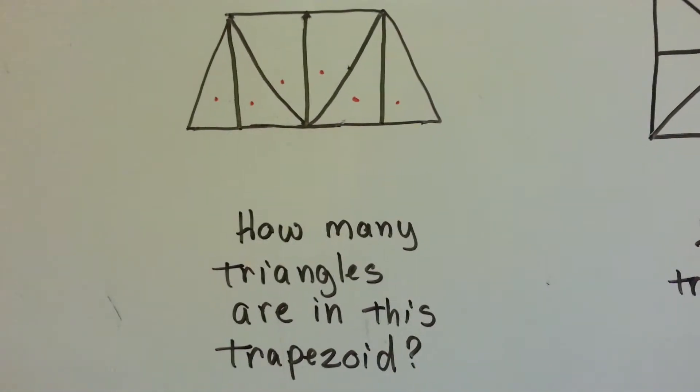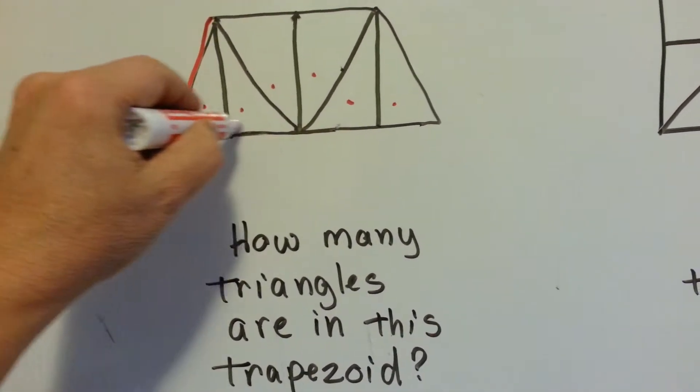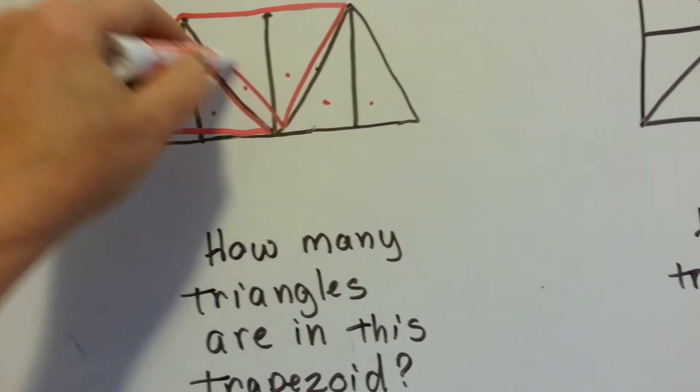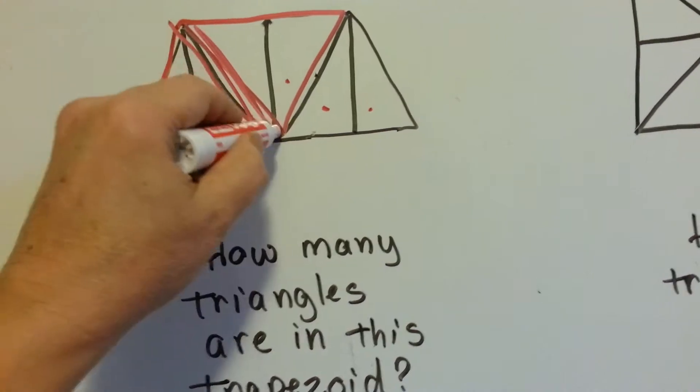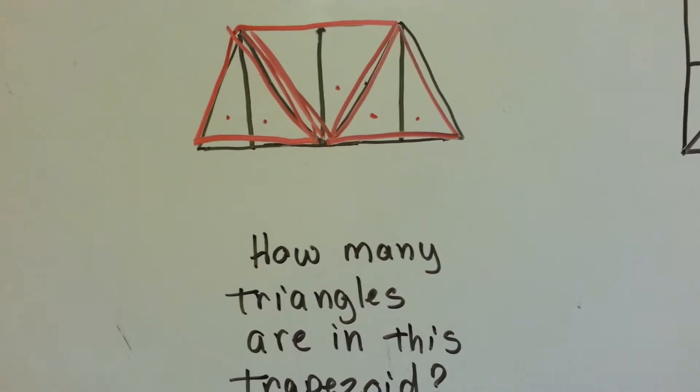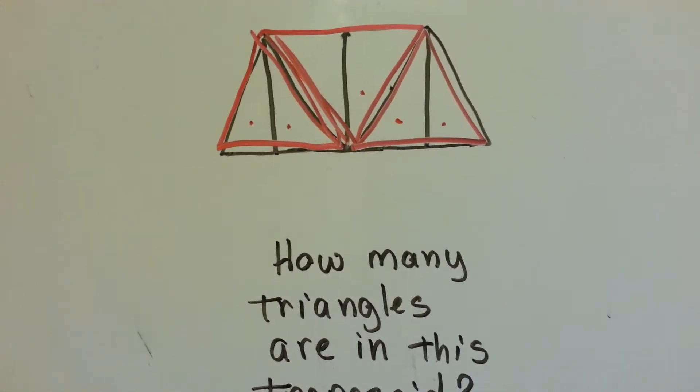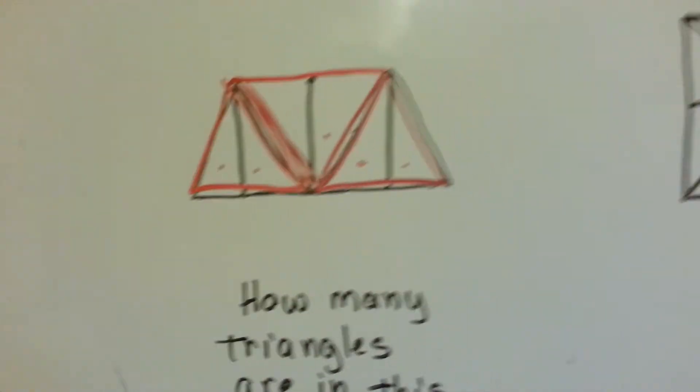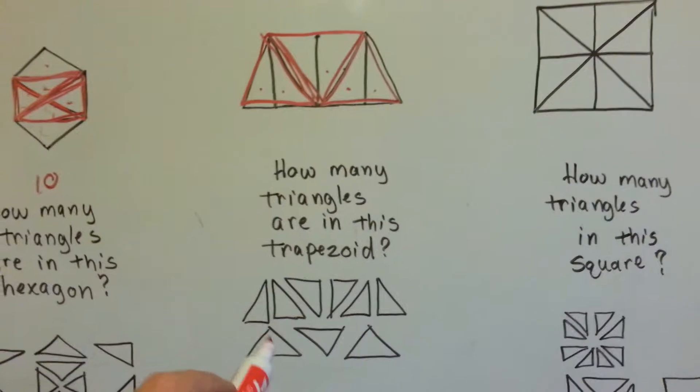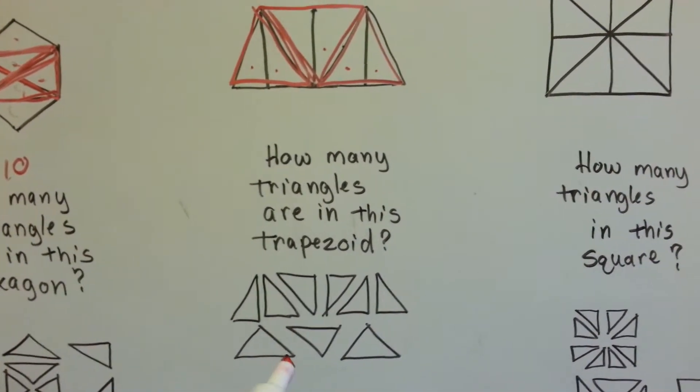But can you see the other ones? Here's seven. Here's eight. See it? And here's nine. See those triangles? So there's hidden triangles. Here is actually all the shapes in that trapezoid that can be triangles. There's nine hidden triangles.